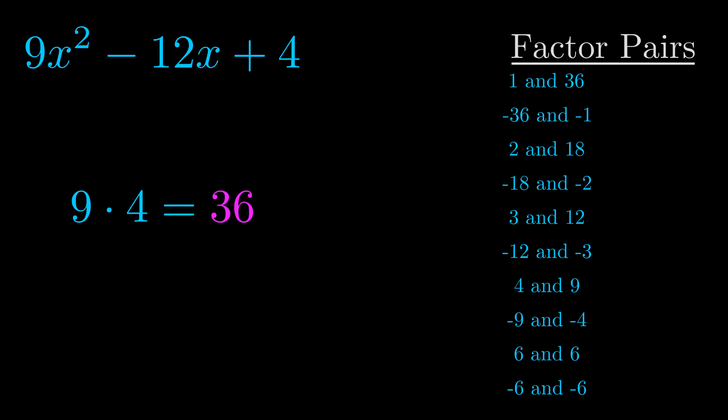The b value is the coefficient on the x term. That's the middle term, the one that we haven't done anything with yet. And really this is the only factor pair that we need.